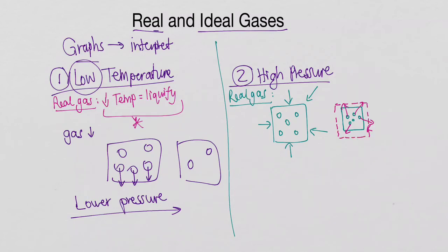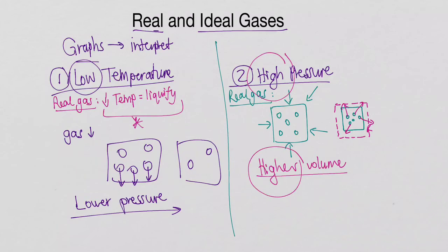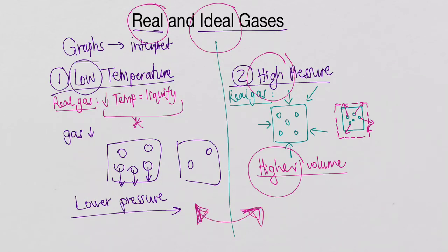Those repulsive forces would cause the volume to be bigger than expected. So what we find is a higher than expected volume. If you're working with very high pressure and you see a deviation where the volume is higher than expected, it is because of repulsive interactions between the particles in a real gas. These are the most important deviations between real and ideal gases.